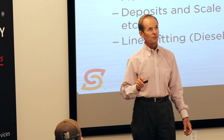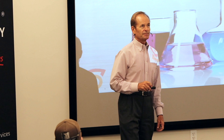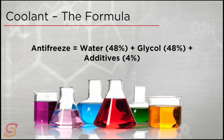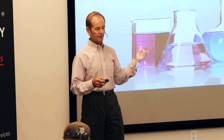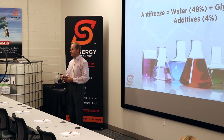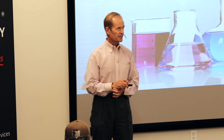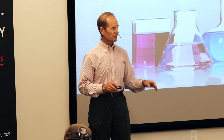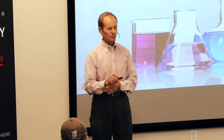We have a formula for antifreeze today — pretty simple stuff. It's about 48% water, 48% glycol, and somewhere around 4% additives. These three components map those three big jobs: water's job is to remove heat, the glycol keeps things from freezing, and the additives prevent corrosion.